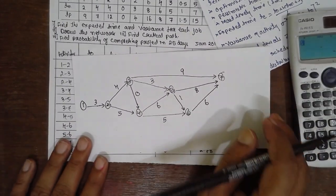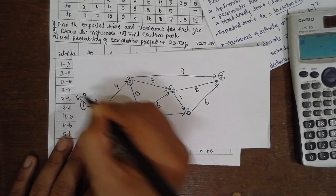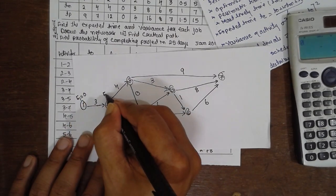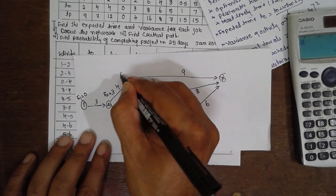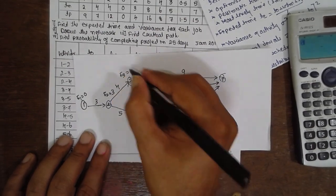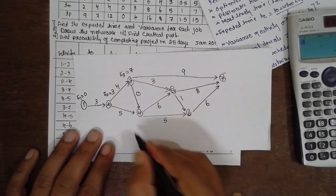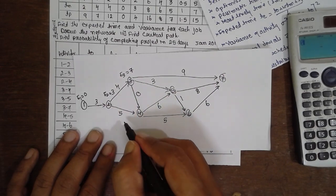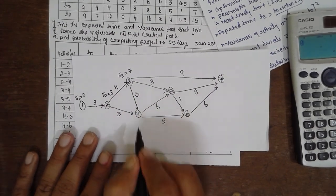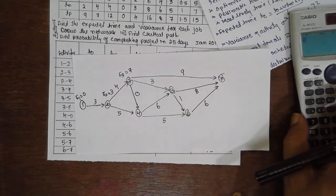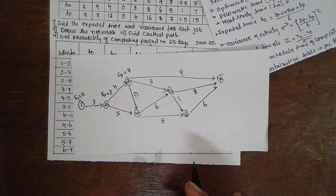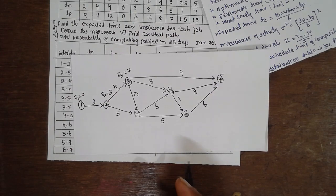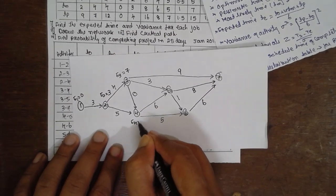Now we are finding the earliest times. E1 equals 0. E2 equals 0 plus 3, which is 3. Move here. There is a junction. E3 equals 3 plus 4, which is 7. Again, 3 plus 5 is 8. 3 plus 5 is 8. Both are 8. Then you have to select the larger value here. Select the larger value. E4 equals 8 here.